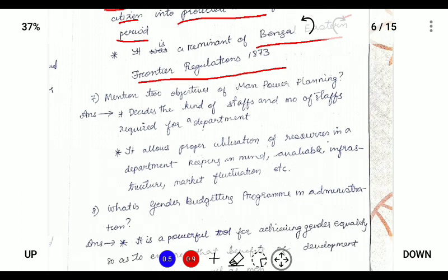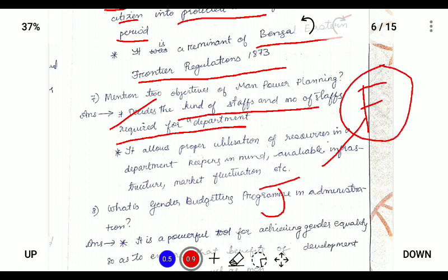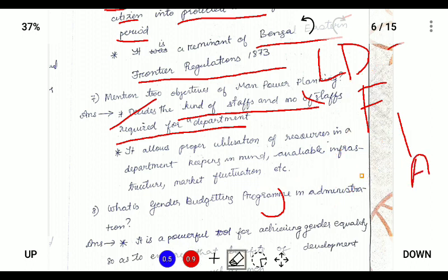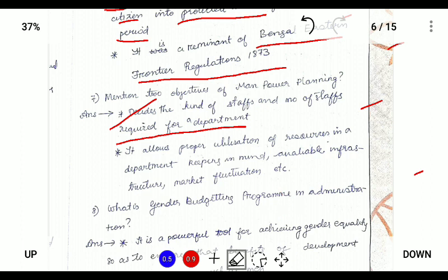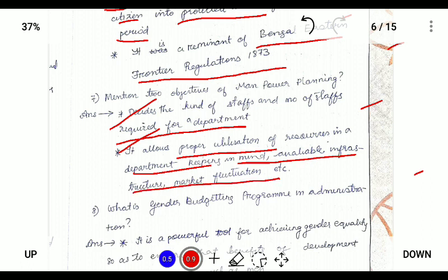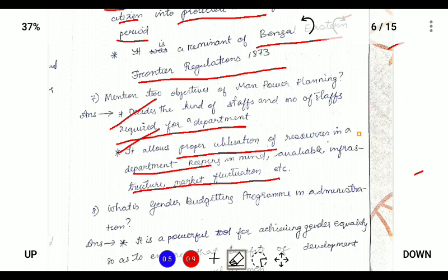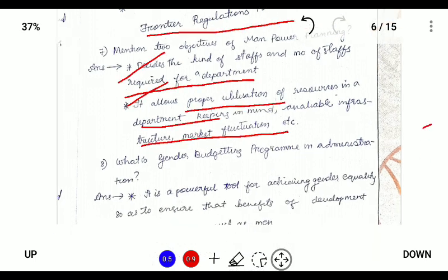What is the main objective of manpower planning? The main objective of manpower planning is to decide what kind of staff is required for a department. For example, for a finance department, what kind of service is required — Junior Divisional Accountant, Lower Division Assistant, or Junior Associate. It also ensures proper utilization of resources in the department, keeping in mind available infrastructure, market fluctuation, etc. Controlling the utilization of resources in the department is the objective of manpower planning.